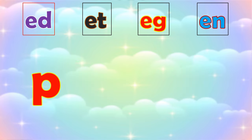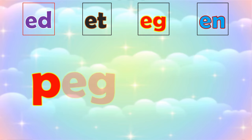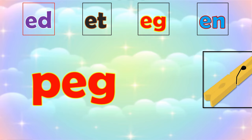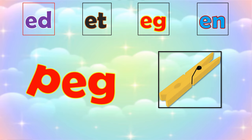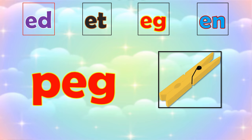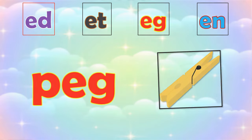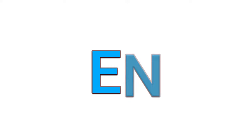P, eg — peg. B, e, g — peg. Now the -en word family.